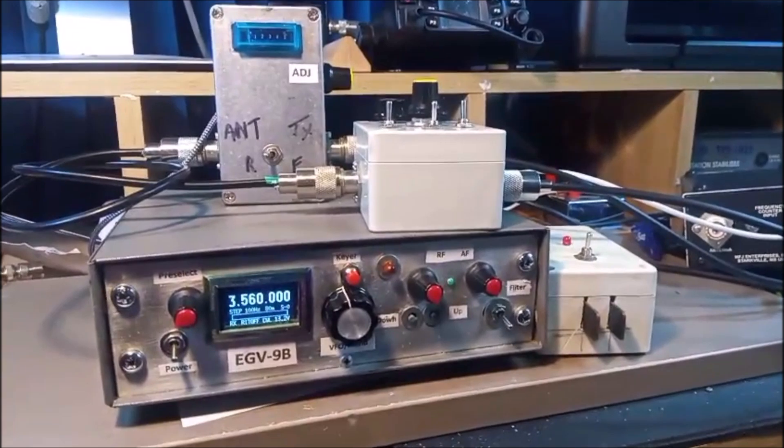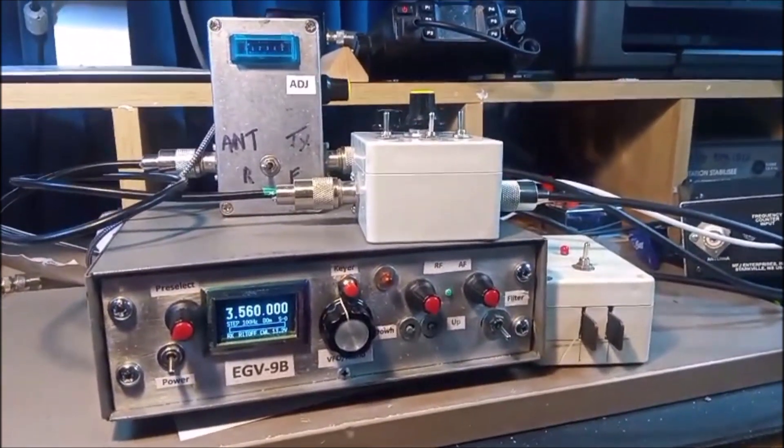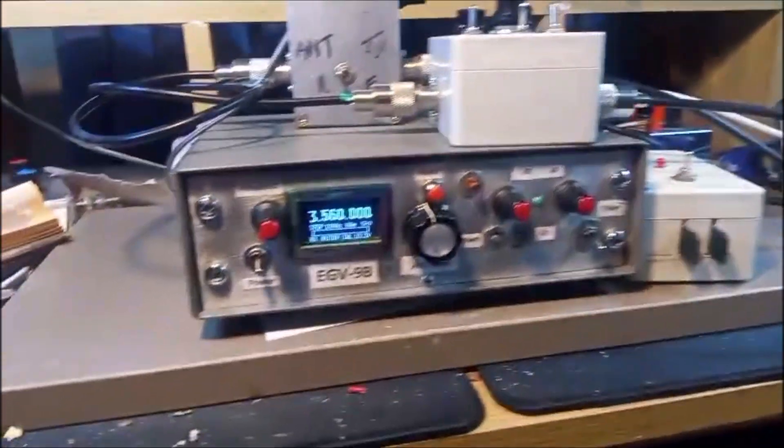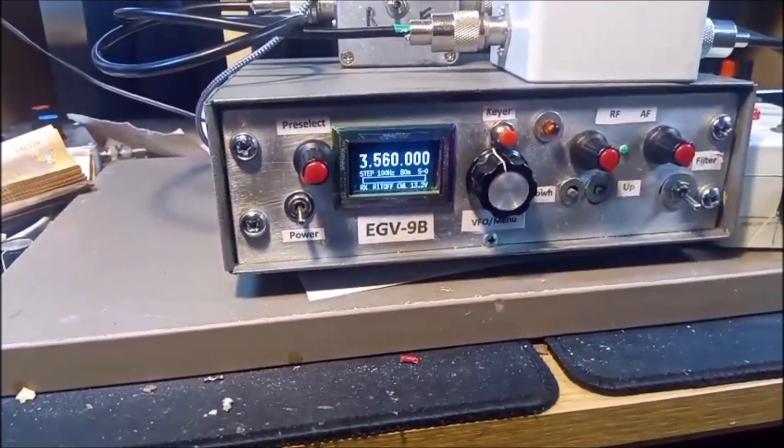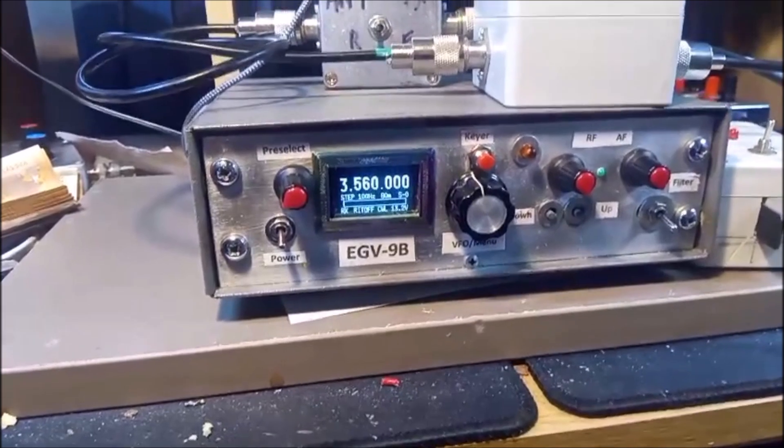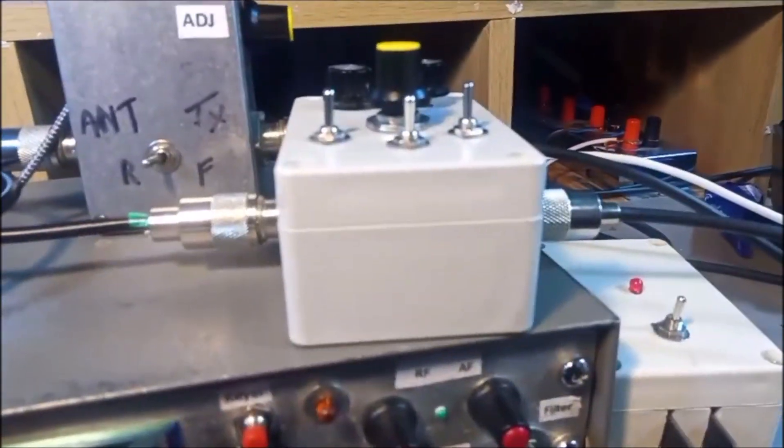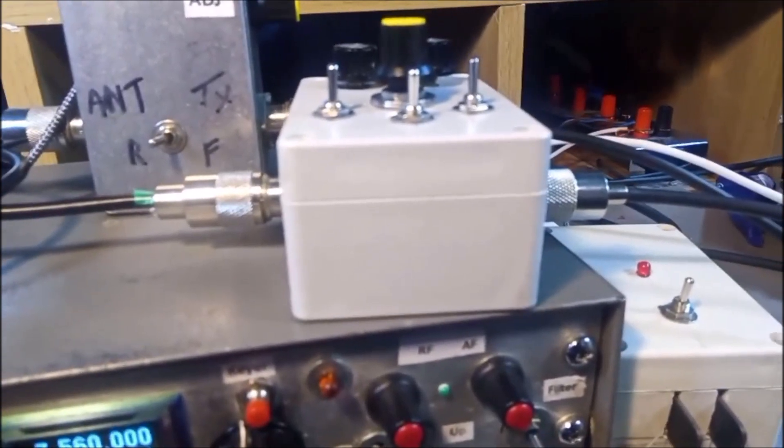Right, I'm set up now to check the ATU operating on the 80 meter band. I'm on 3.560 megahertz there as you can see, and I'm straight through the ATU. So I'm in bypass mode. So let's check what the SWR is like there.